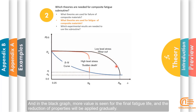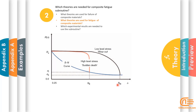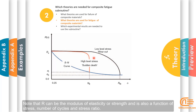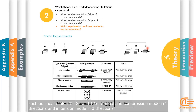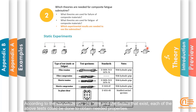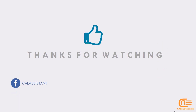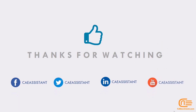The core value is used for the final fatigue life and the reduction of properties will be applied gradually. Note that R can be the modulus of elasticity. According to the standard, you can see the details that exist here. I hope you have received the items you were looking for in this package. Follow us on our social pages and website. Have a nice day.